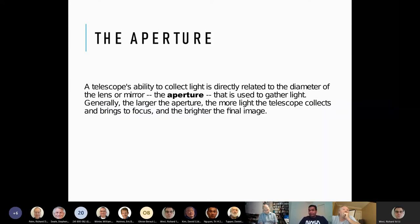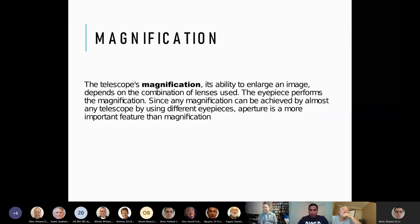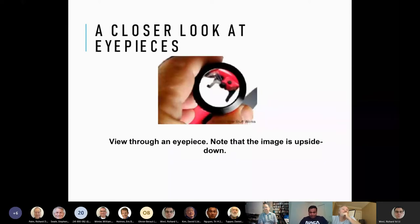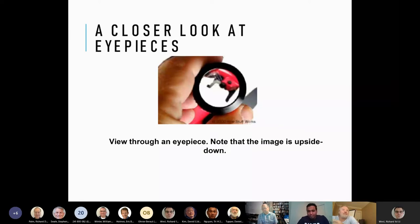The image through a telescope is going to be upside down, but there are other ways to make it straight. You don't necessarily need to correct it if you're just viewing through a telescope. If you're doing an astrophotography project, you can use software to correct it.